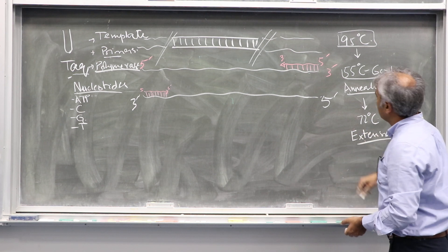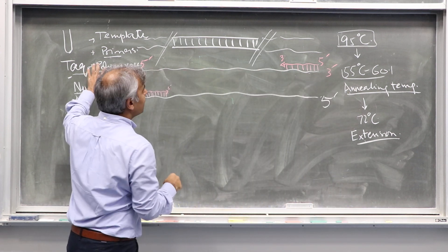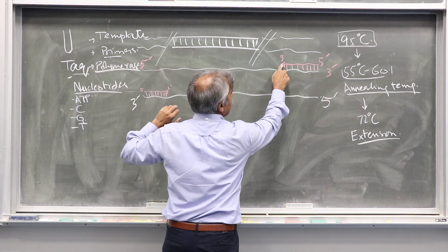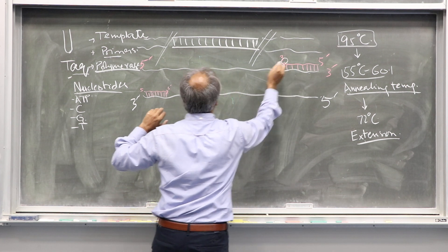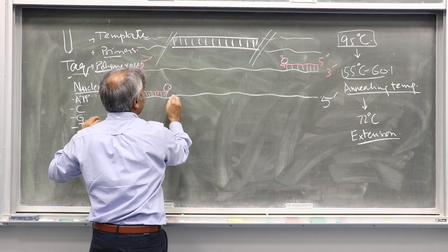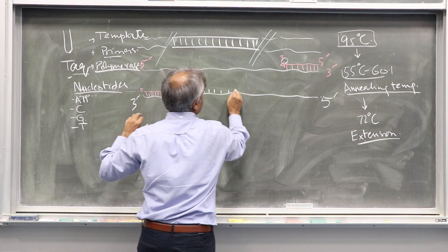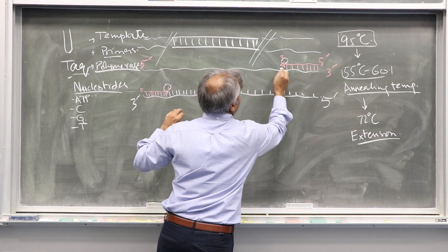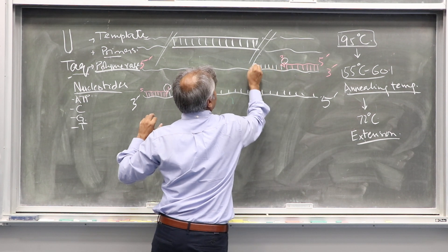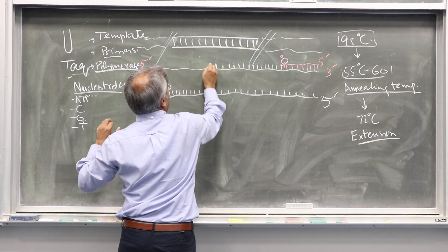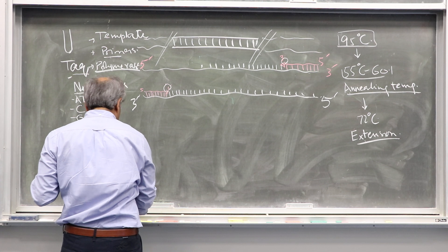Now what will happen? The polymerase will come and bind here. Taq polymerase will come and bind, and it will start synthesizing a copy of this complete strand on both sides. The complementary nucleotides are added, and the end result is synthesis of a complementary strand.